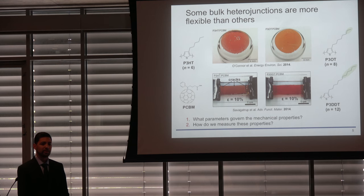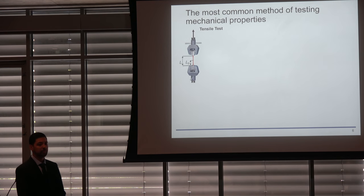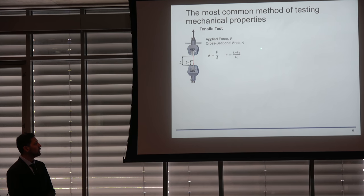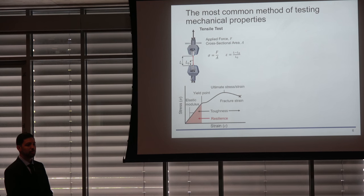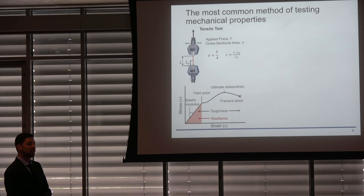The questions I wanted to ask during my PhD were: what parameters govern these mechanical properties and how do we measure them? The most common method is the tensile test, where you elongate a sample and measure force as a function of cross-sectional area to calculate stress. The strain is the relative elongation change divided by the original length. Together, these quantities plotted against each other create a stress-strain curve.